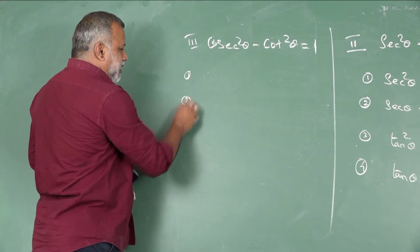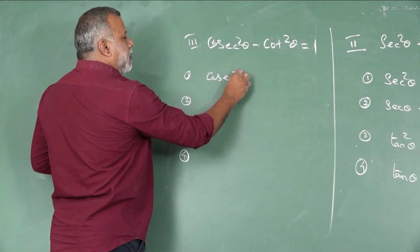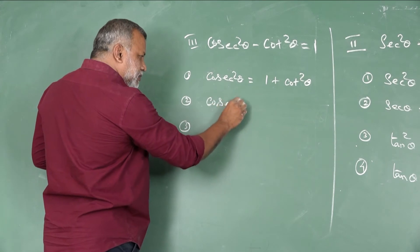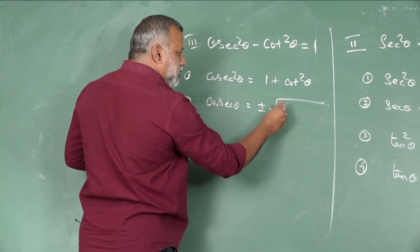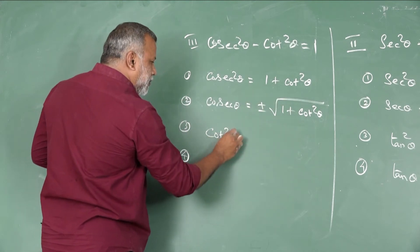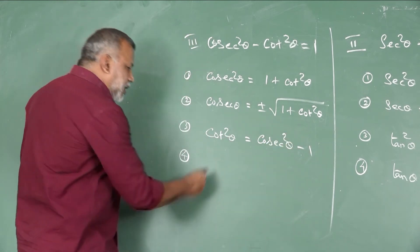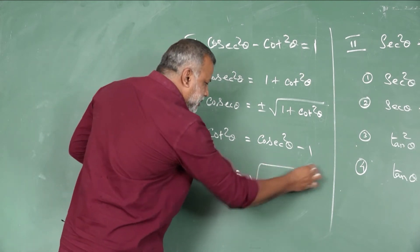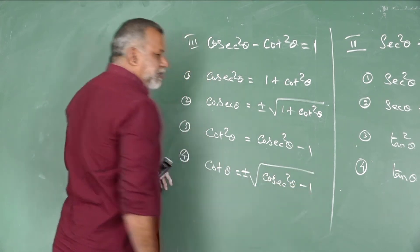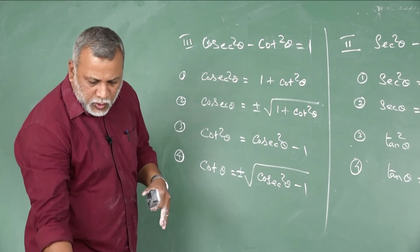In the same way we are able to derive four sub-results from this. If I want to find out cosec²θ, convert cot²θ to the other side: cosec²θ = 1 + cot²θ. Then cosec θ = ±√(1 + cot²θ). If I want to find the value of cot²θ, convert to the other side: cot²θ = cosec²θ − 1. Then cot θ = ±√(cosec²θ − 1).